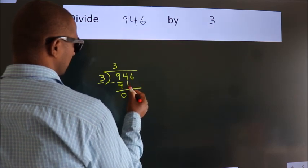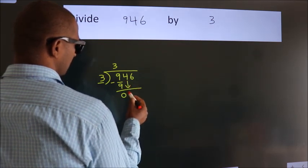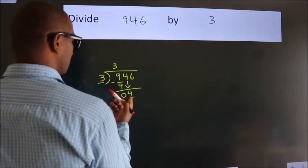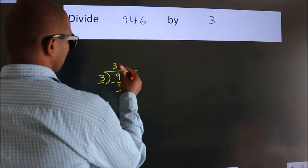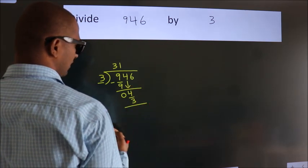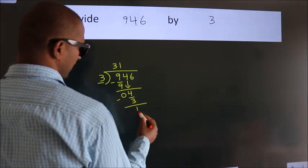After this, bring down the beside number. So 4 down, so 4. A number close to 4 in 3 table is 3 times 1 is 3. Now, we subtract, we get 1.